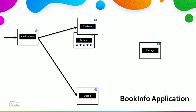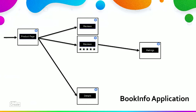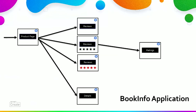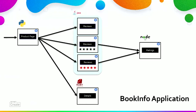The Reviews microservice contains three different versions. Version one doesn't call the Ratings microservice. Version two calls the Ratings microservice and prints each star rating as one to five red stars. This is a polyglot application — each microservice is written in a different language: Python, Java, Ruby, and Node.js. This makes it an interesting service mesh example because of its multitude of services, languages, and different versions of the Reviews microservice.